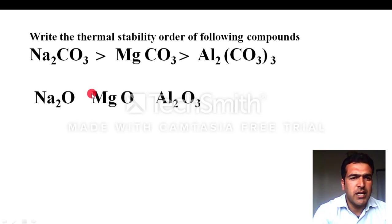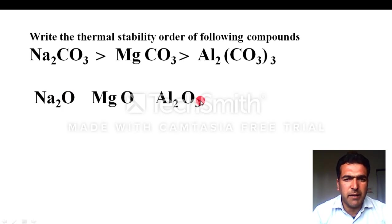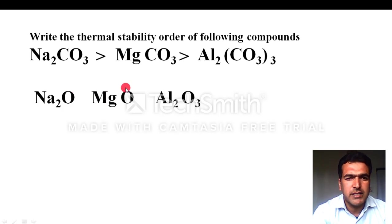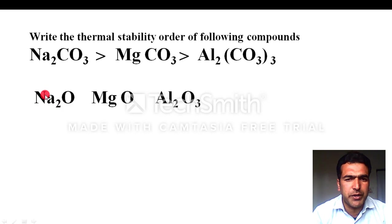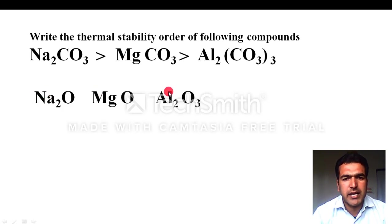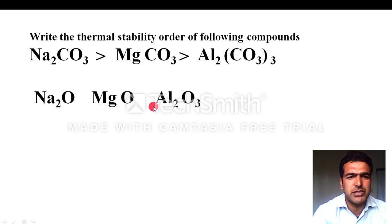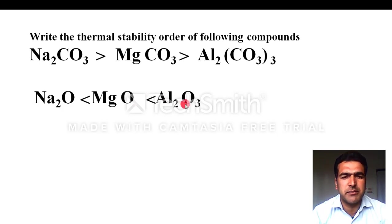Similarly, for sodium oxide, magnesium oxide, and aluminium oxide — the oxide anion is monoatomic. For monoatomic anions, thermal stability depends on lattice energy, which is proportional to Q1·Q2/r². Aluminium has the highest charge (+3), so its lattice energy is greatest. The order of thermal stability is: Al2O3 > MgO > Na2O.